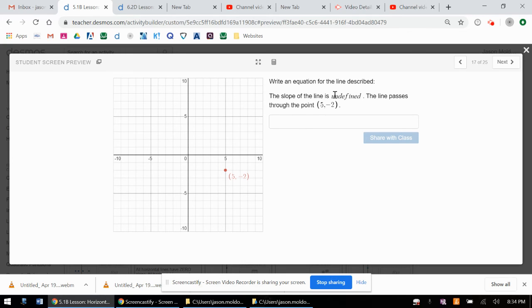And this one's going to be undefined, which means it's going to be vertical, x equals. All we're doing is stealing the x value. So it's x equals. We want it to go through an x value right there. We want a line that looks like this. That's going to be x equals 5.